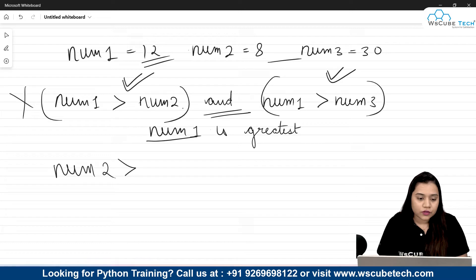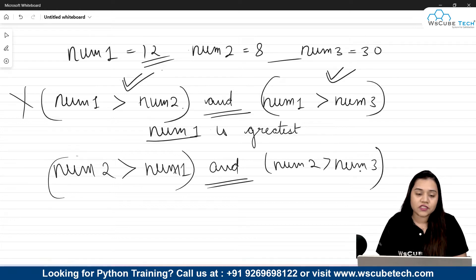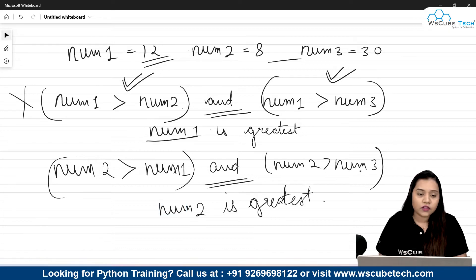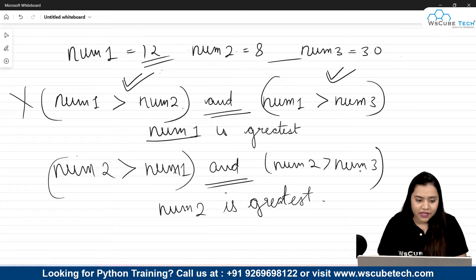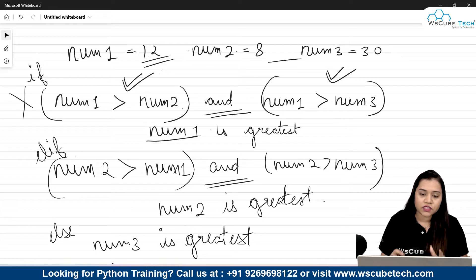The next condition checks that number two is greater than number one AND number two is greater than number three. In our example, number two (8) is neither greater than 12 nor greater than 30, so number two is not the greatest either. If neither number one nor number two is greatest, then definitely number three is the greatest — handled with an else clause requiring no condition.